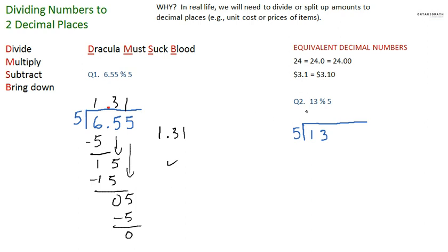The only other thing that I really want you to be able to do as well is be able to divide 13 divided by 5 to 2 decimal spots. The only thing is, if you look at 13, there aren't any decimal spots. So we just have to be able to put a decimal spot and 2 zeros after it.